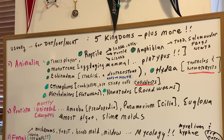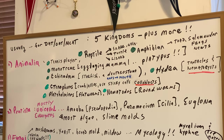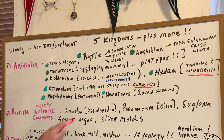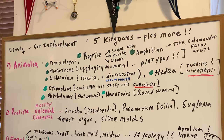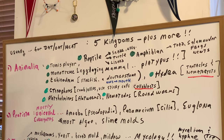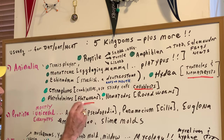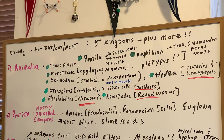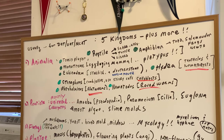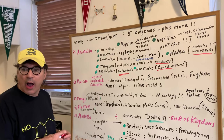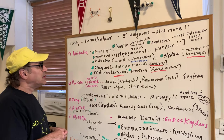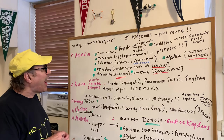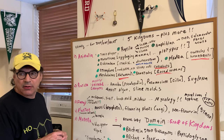The platyhelminthes are the flatworms. The nematodes are the roundworms, so we want to make sure we keep that distinction in mind. Flatworms are organisms that do not have a body cavity — they are acoelomates.